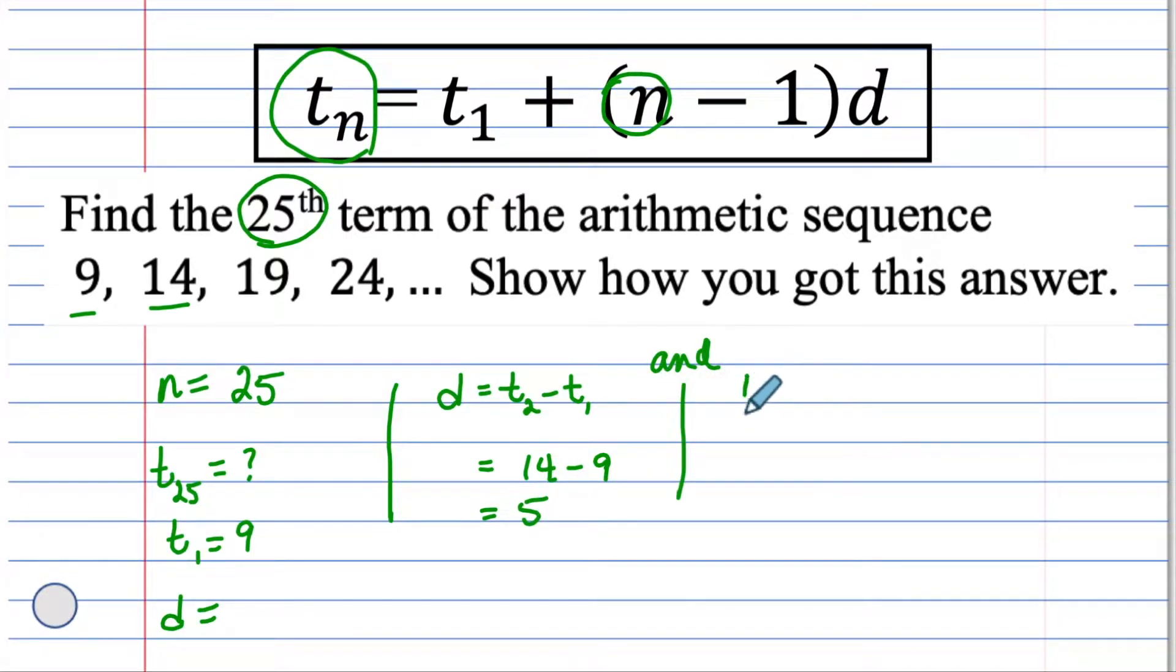Let's do one more check. d is the third term minus the second term. The third term is 19 and the second term is 14, which also gives a 5. We can confidently say now that d is 5 for sure.